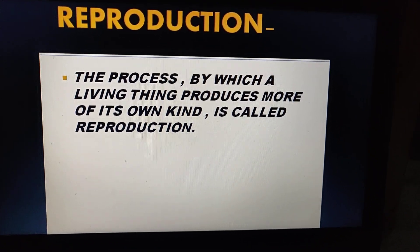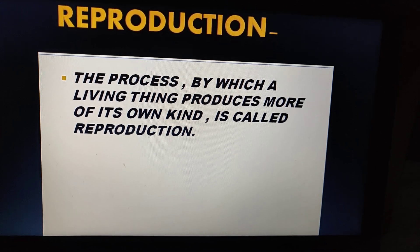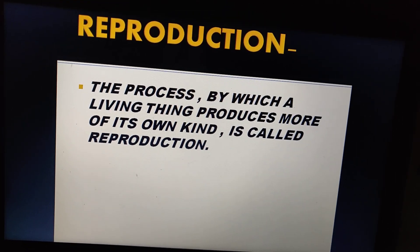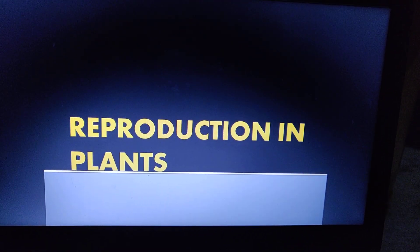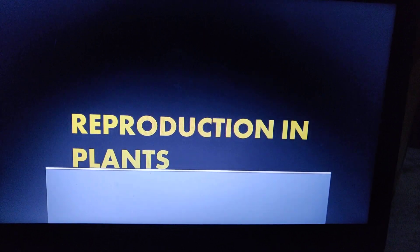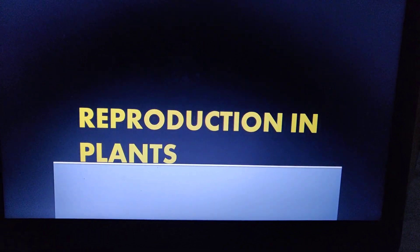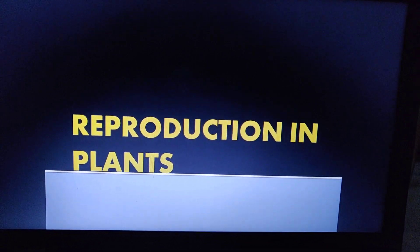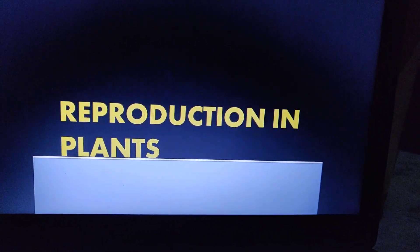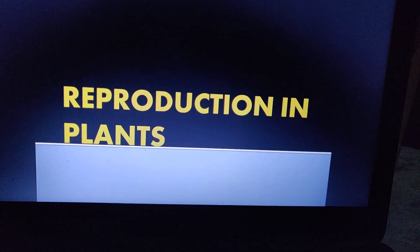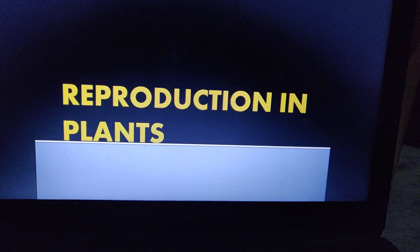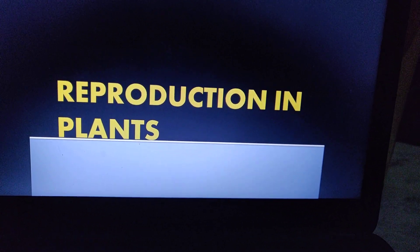The definition of reproduction is: the process by which a living thing produces more of its own kind is called reproduction. Reproduction occurs in animals, in human beings, and in small microorganisms also. But today we are going to study reproduction in plants; reproduction in animals and humans will be studied in higher classes.